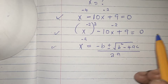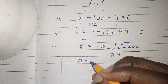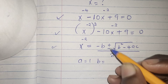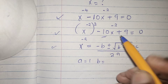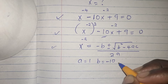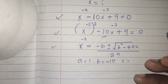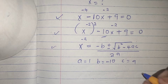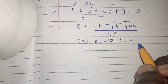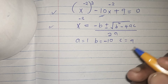From our equation, a is equals to 1, b is equals to negative 10, and c is equals to 9. So let us substitute these figures into our quadratic formula.